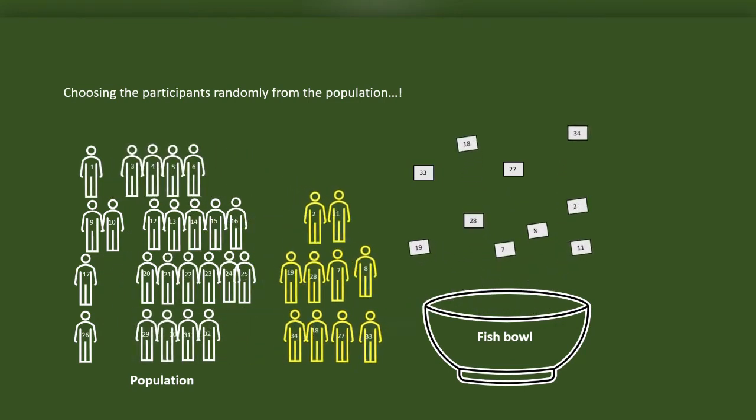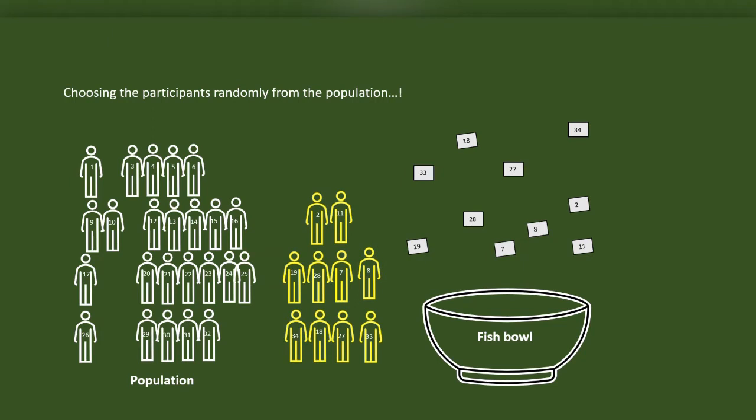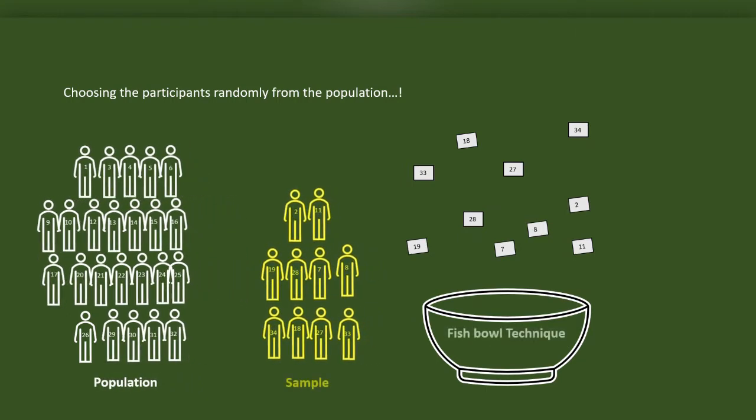The second person is of ID 27. Likewise, I randomly chose 10 participants from the population to the sample using fish bowl technique. What we did now is called simple random sampling.